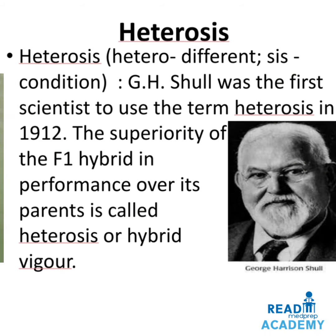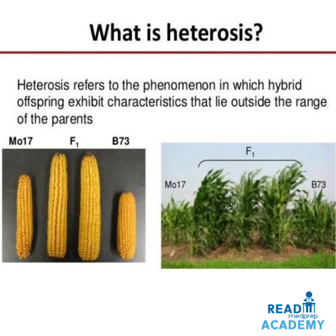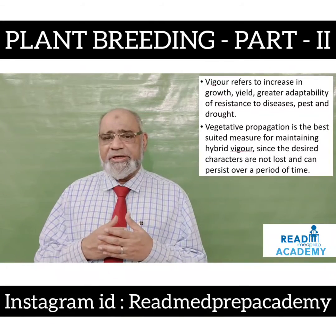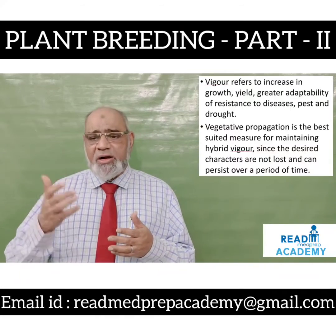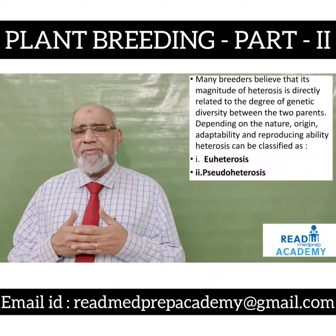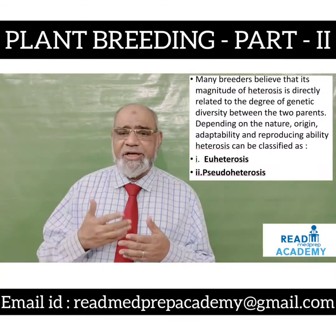What is heterosis? 'Hetero' means different and 'sis' means condition. G.H. Shull was the first scientist to use the term heterosis in 1912. The superiority of the F1 hybrid in performance over its parents is called heterosis or hybrid vigor. Heterosis refers to the phenomenon in which the hybrid offspring exhibits characteristics that lie outside the range of the parents. In the images, MO17 crossed with B73 produces an F1 hybrid with a bigger and larger corn, and the F1 plants are taller with better yield. Vigor refers to increase in growth, yield, greater adaptability and resistance to diseases, pests and drought. Many breeders believe that the magnitude of heterosis is directly related to the degree of genetic diversity between two parents.